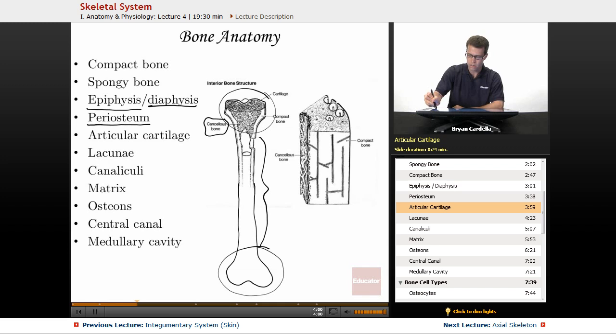The articular cartilage is articular because it's when bones articulate with respect to one another. So when you look at how a bone connects to another bone via a joint, the articular cartilage is usually going to be a nice cushion that's going to be on the ends that are touching the other bones.